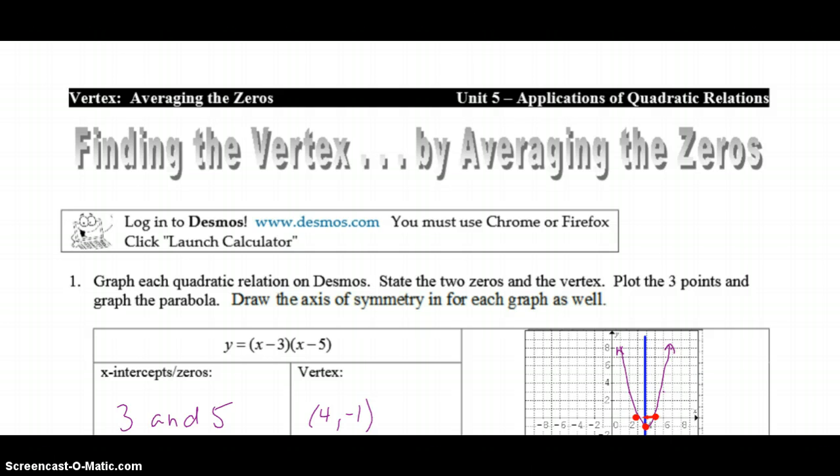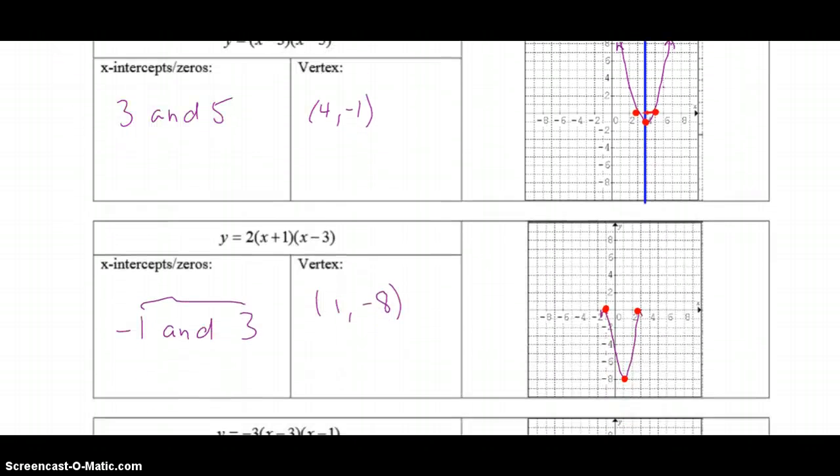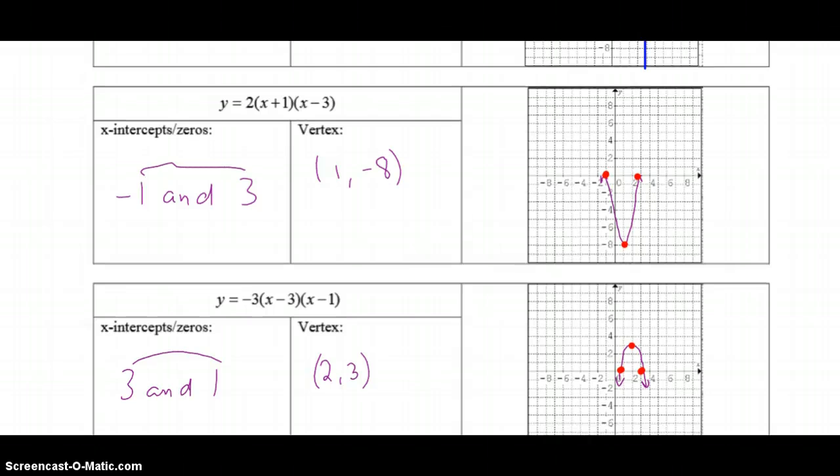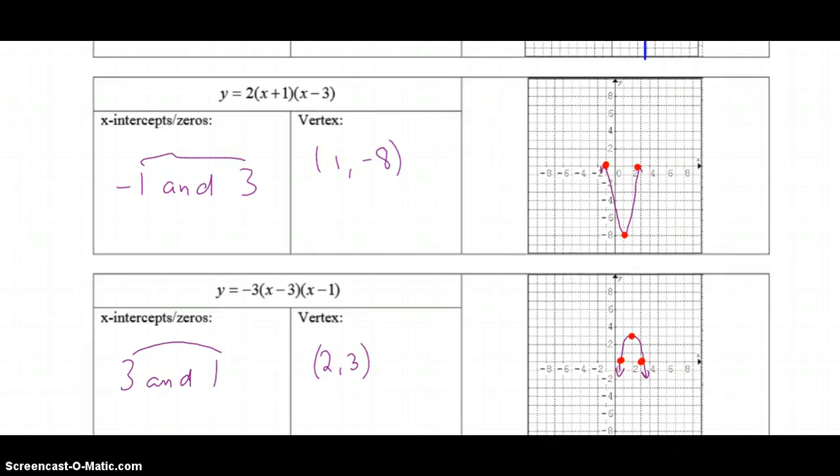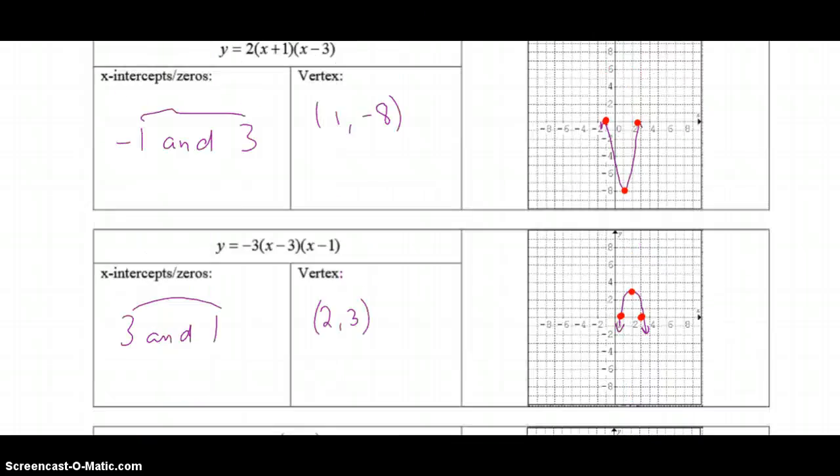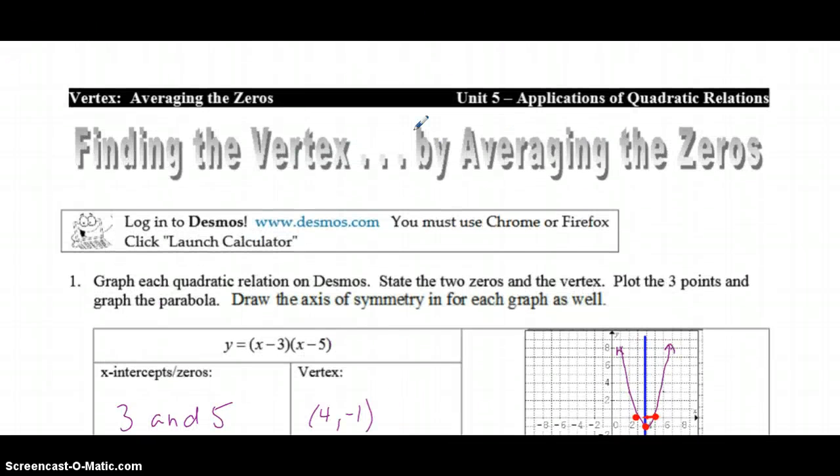Last time we found the vertex using completing the square, which works when you have an equation in standard form with no brackets. If you're given an equation in factored form, which you've been given on this first practice sheet, completing the square isn't the best approach because you'd first have to expand, get rid of brackets, and collect like terms. When you already know the zeros or have factored form, your best approach is averaging the zeros.